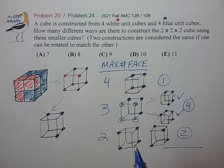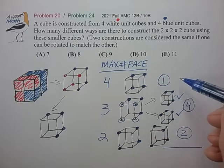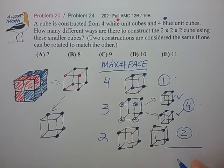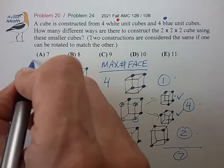That seems to exhaust the count. And the total number is 1 plus 4 plus 2, 7 for choice A.